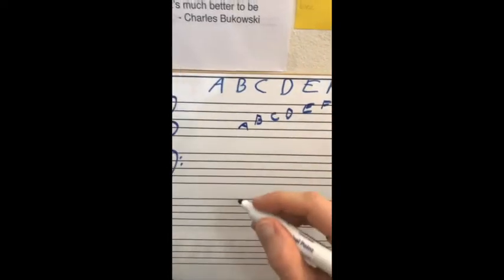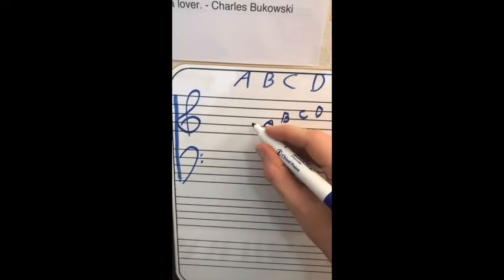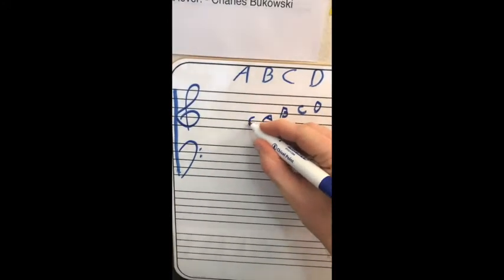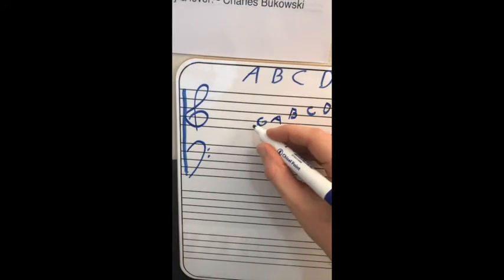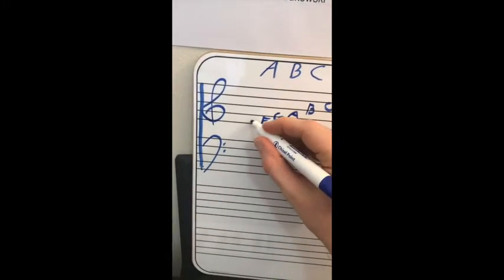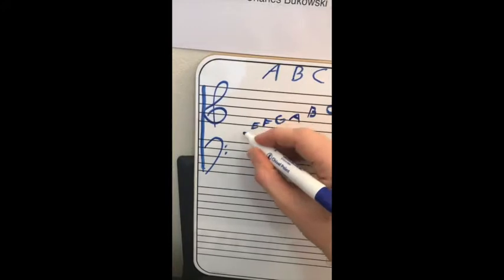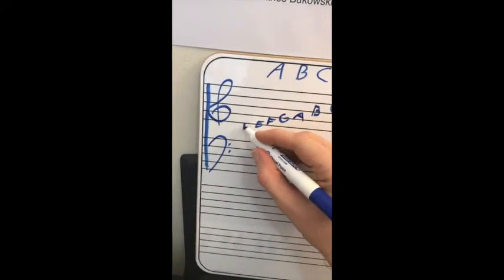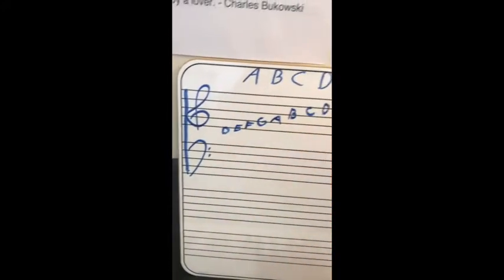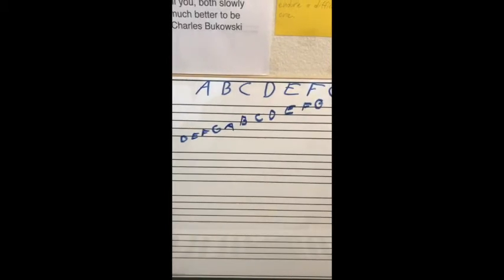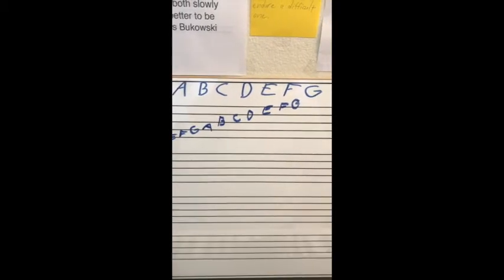And the G sits just on top of that line. A, B, C, D, E, F, G. Now, since it's only seven letters, if you wanted to go backwards, then that would make this line G, which means the first space is F, and the first line is E, and the D sits just underneath, like that. There you go. Every line and every space represented by a single letter.